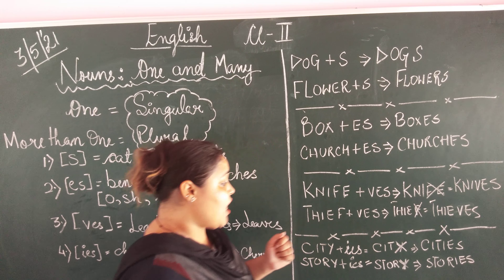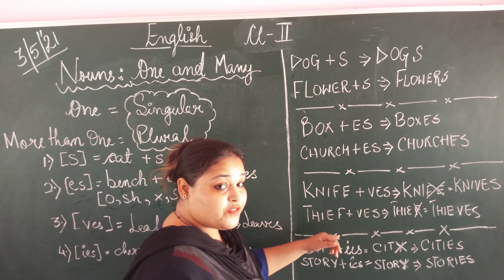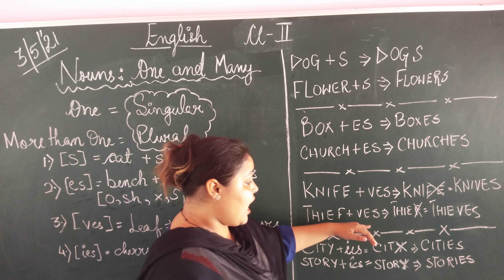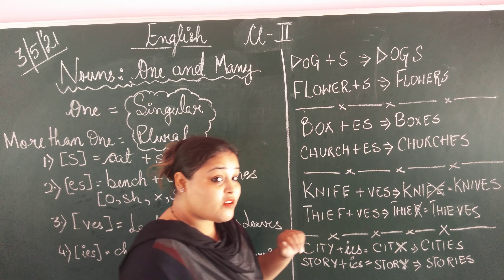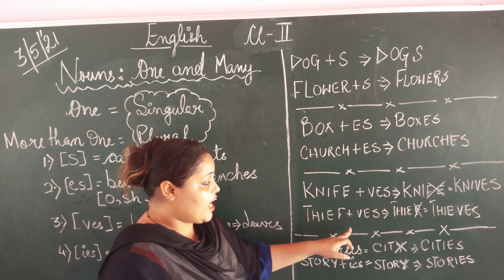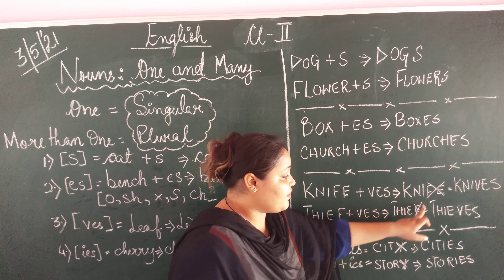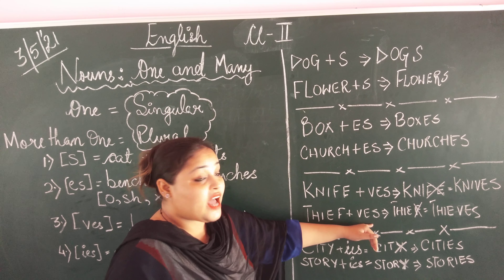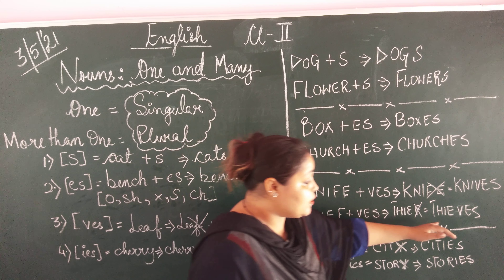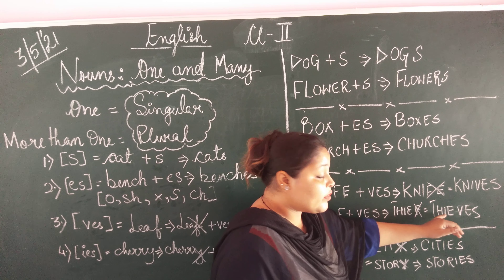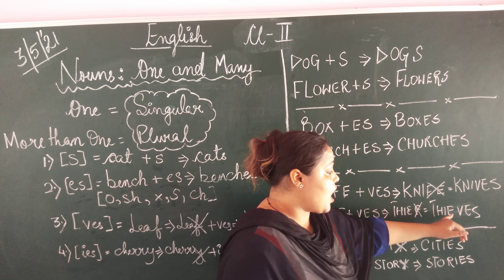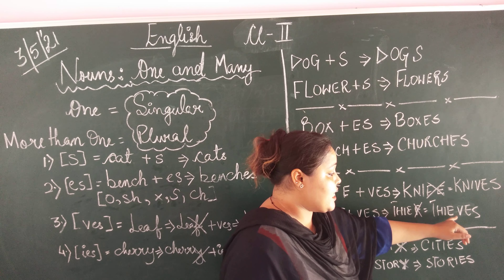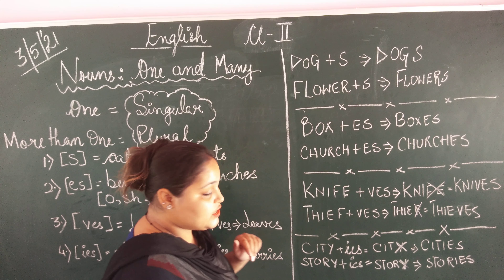See the next example: thief. Adding VES — cancel out F, add VES. What will it become? T-H-I-E-V-E-S: thieves. Thief is singular and thieves is plural.